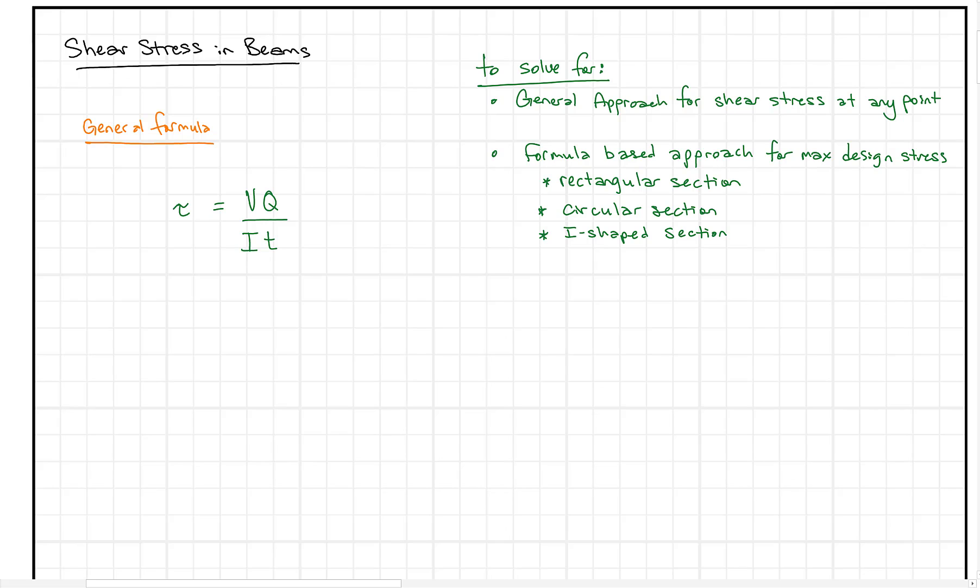Alright, so what I want to do today is take a look at shear stress in beams. Typically, what we've done so far in strength of materials is just look at an average shear stress, where the average shear stress, tau, equals V over A.